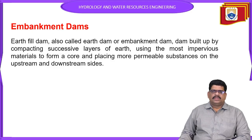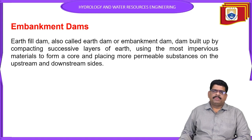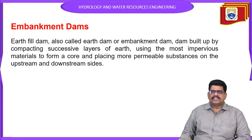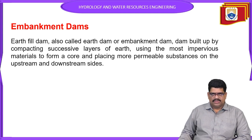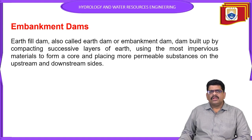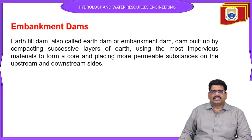For embankment dams: embankment dams can also be called earthen dams. An embankment dam is built up by compacting successive locally available earthen materials, using the most impervious materials for the core and placing more permeable substance on the upstream and downstream sides. Earthen dams use locally available earthen materials only.